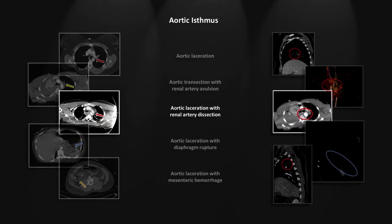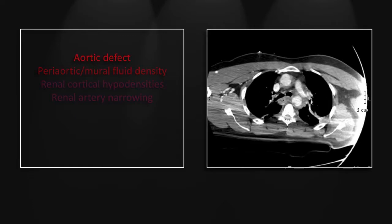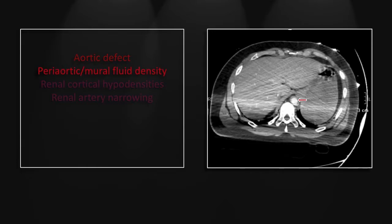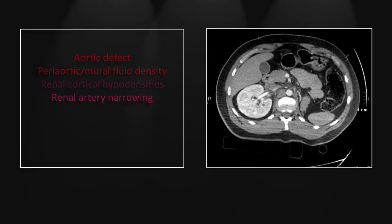Our next case is an aortic laceration with dissection of the renal artery. Here again, you see the proximal defect and the distal defect in the aorta. This is a high-grade laceration — I would call it almost a near transection, and we'll appreciate that on the sagittals. A helpful finding here is thickening of the aortic wall or the presence of periaortic fluid; in either case, it's a helpful indicator of the presence of a vascular injury. Here you see wedge-shaped peripheral cortical hypodensities consistent with thromboembolic phenomena, but they're regional — posterior and superior in this single right kidney. Here you see stranding in the right renal hilum and a small segment of irregular, indistinct right renal artery consistent with a dissection.